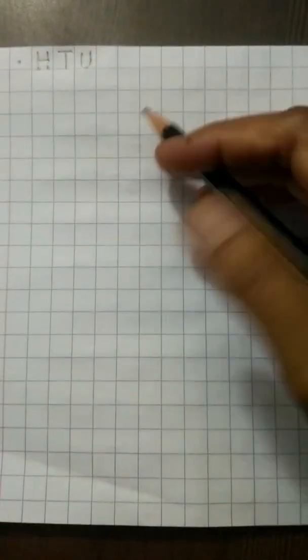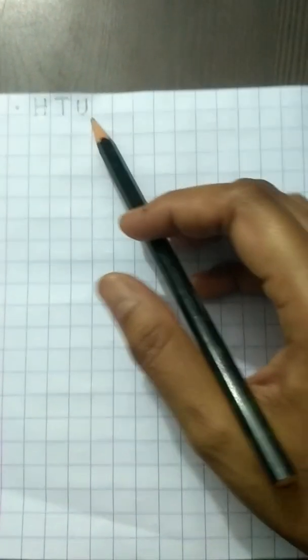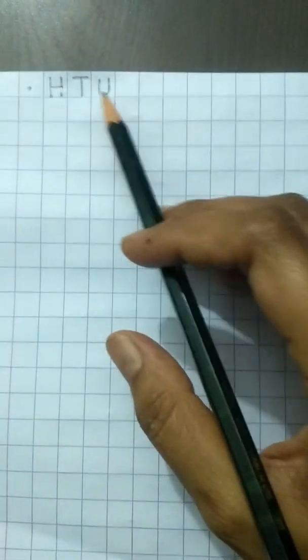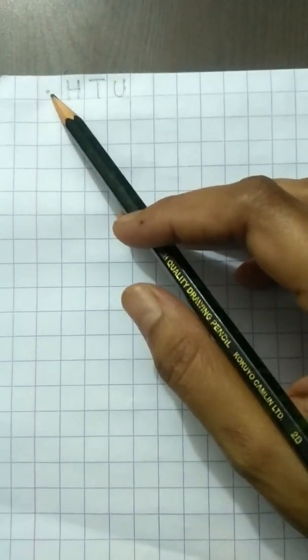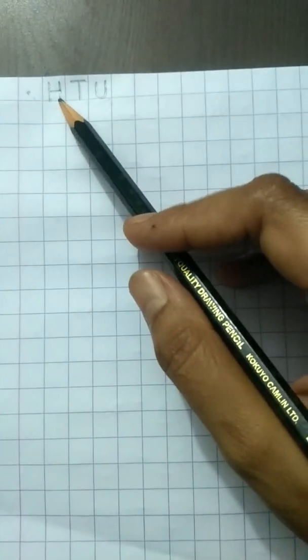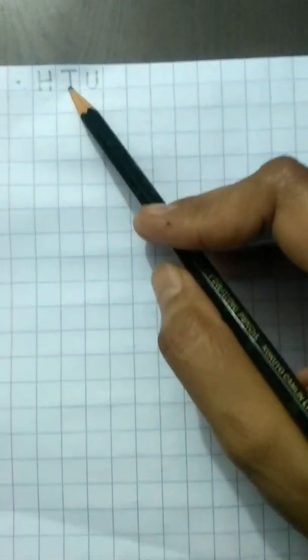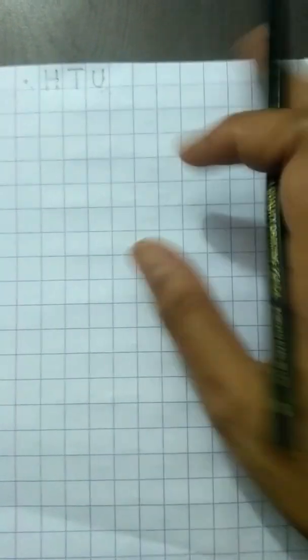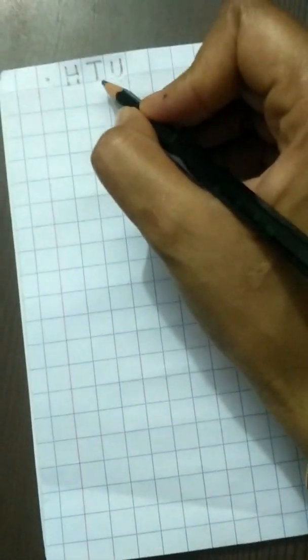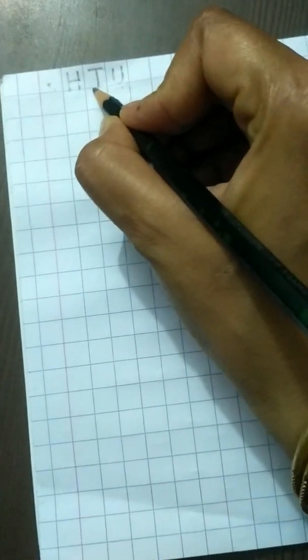So children, after 90 the next number is 91. But here from 91 we are going to write in 100, and 100 is a 3 digit number, that is hundreds, tens, and units. So same way here, when we are taking a new page to write from 21, we will leave one box after the margin, then we will write H, that is for hundreds, T for tens, and U for units.